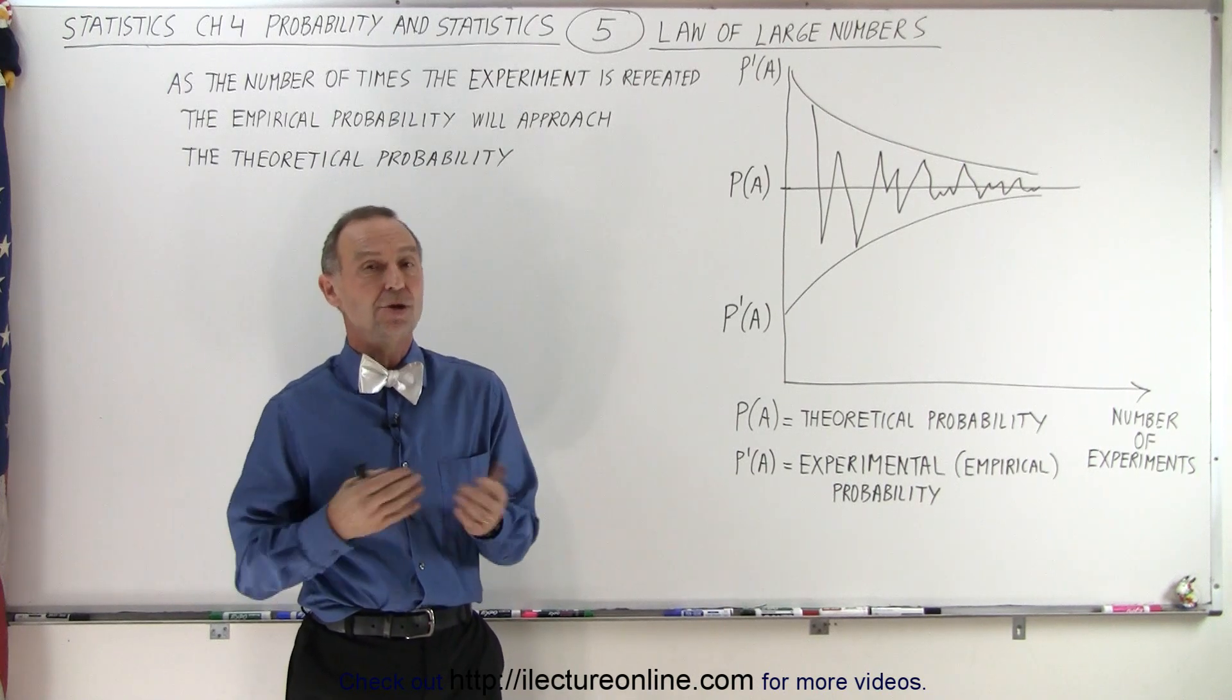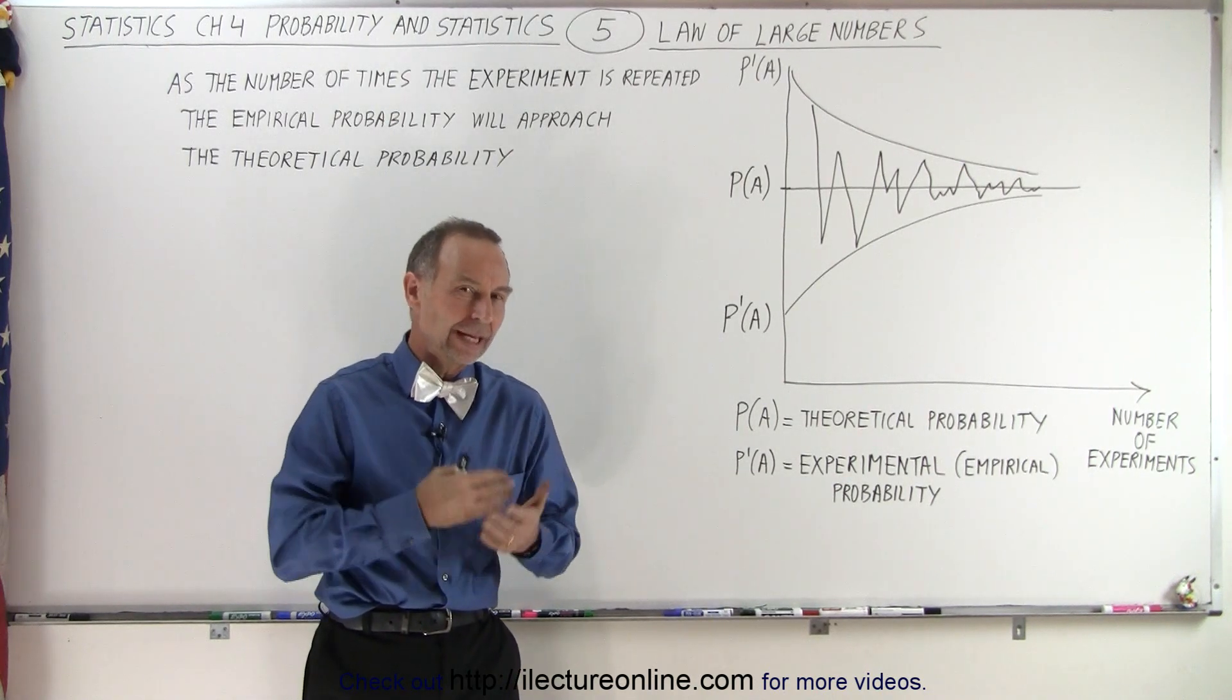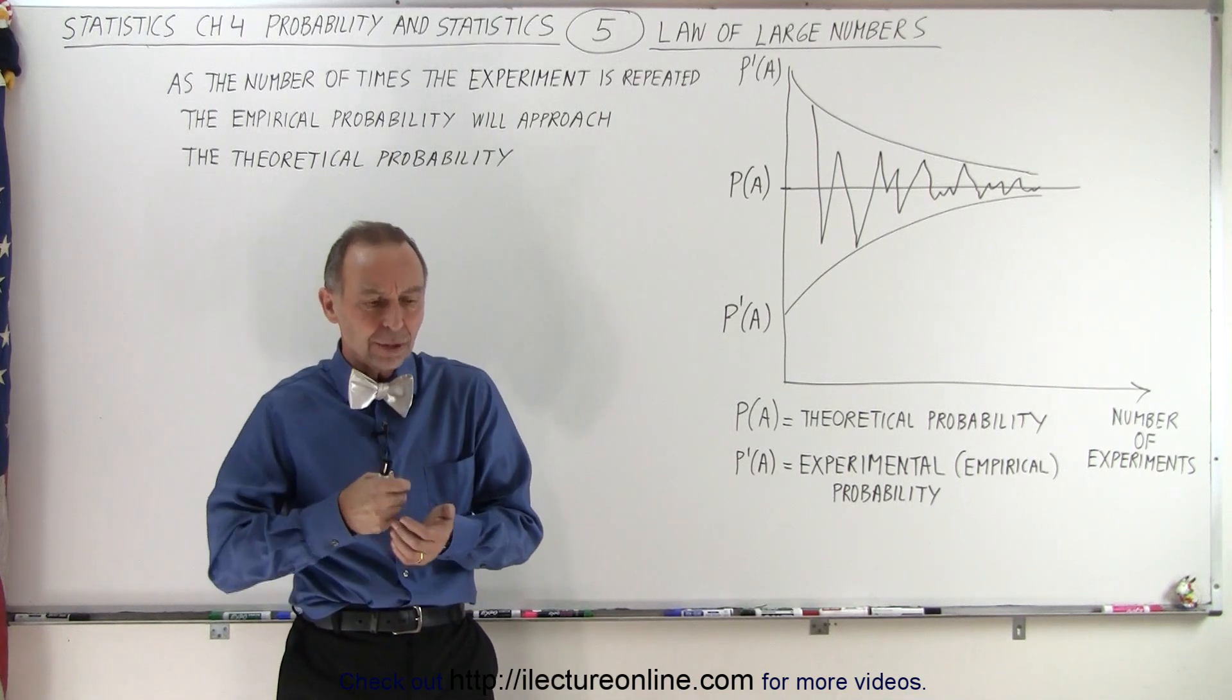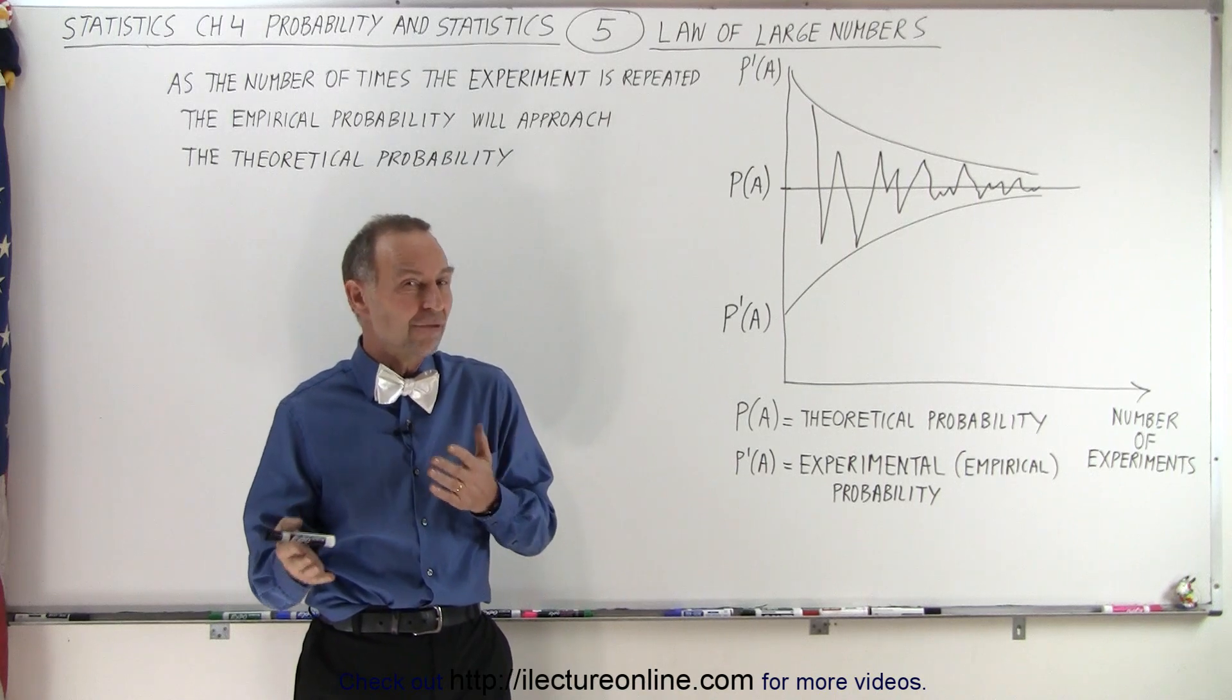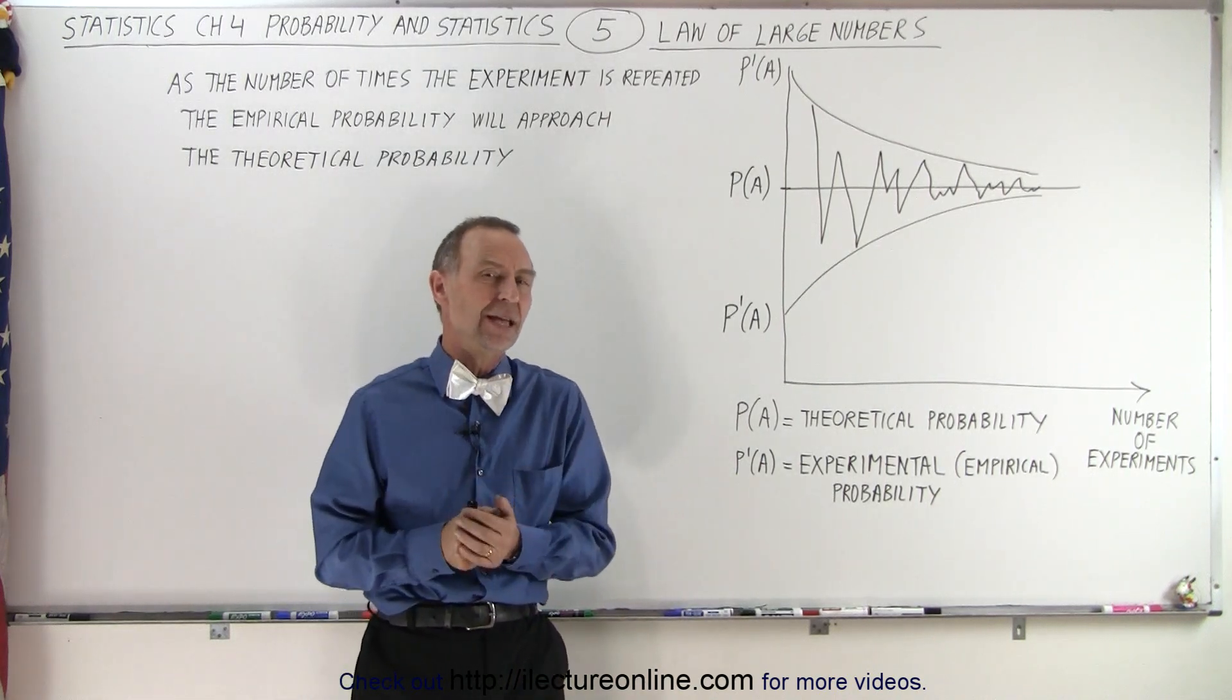When you toss a coin, you know there's a 50% chance you'll get heads and 50% chance you'll get tails. But when you toss a coin 10 times or even 100 times, you will not get exactly 50-50. You will not get 50 heads and 50 tails.